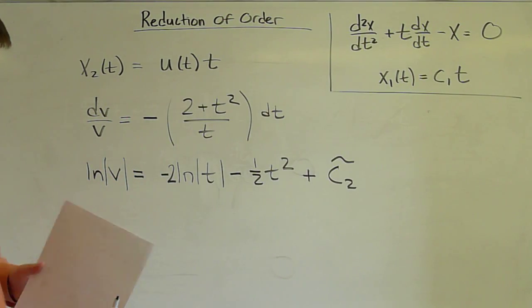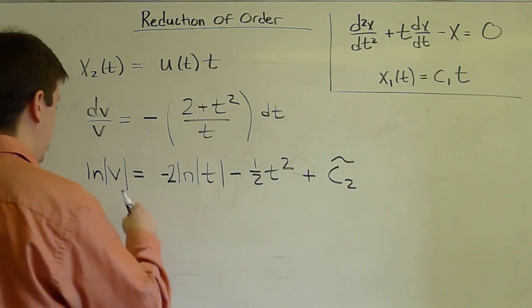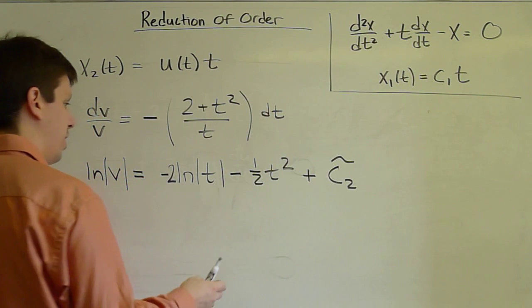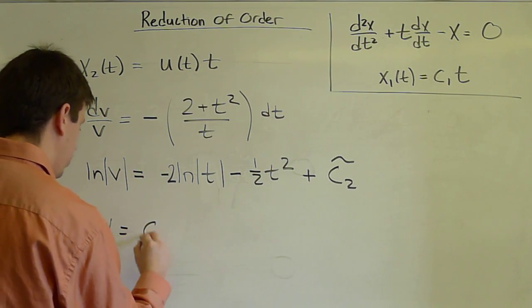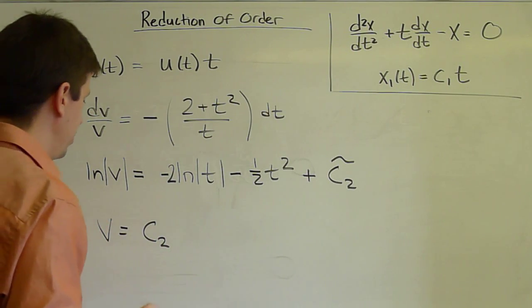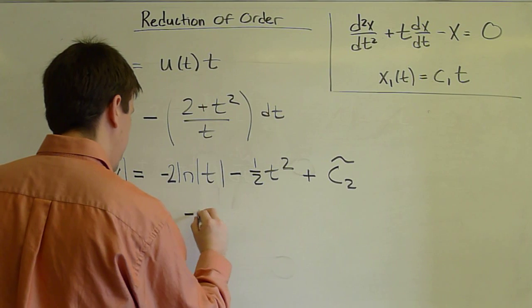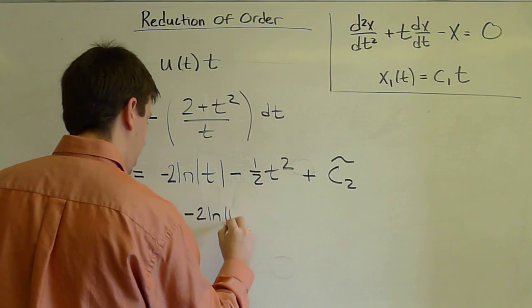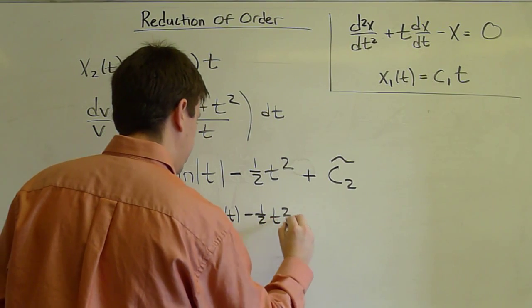Now, from first order ODEs, we know that when we exponentiate both sides, the absolute values can get incorporated into this constant c2, which drops down and we get v equals some slightly different constant c2 e^(-2 ln(t) - 1/2 t²).